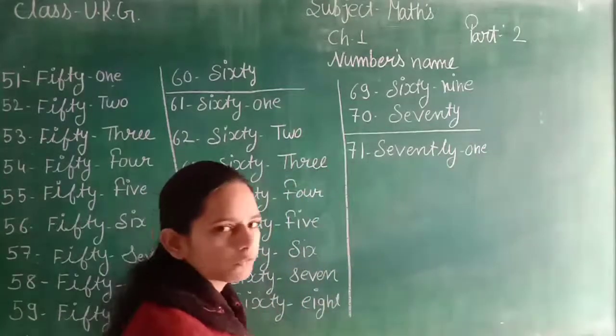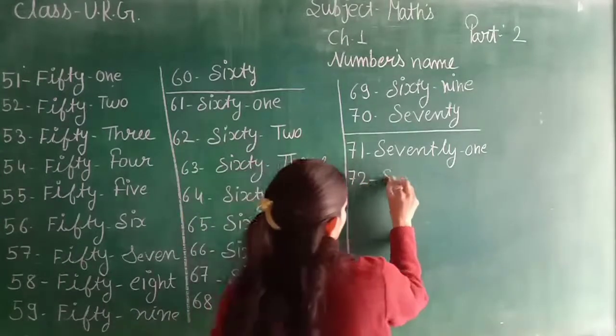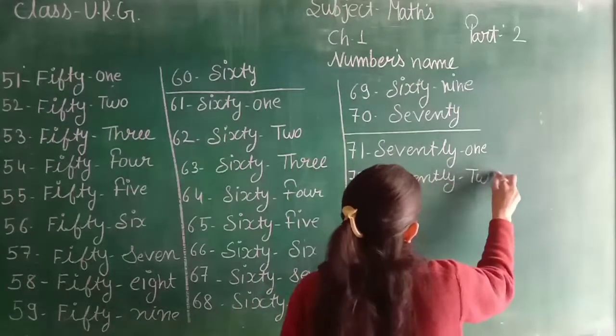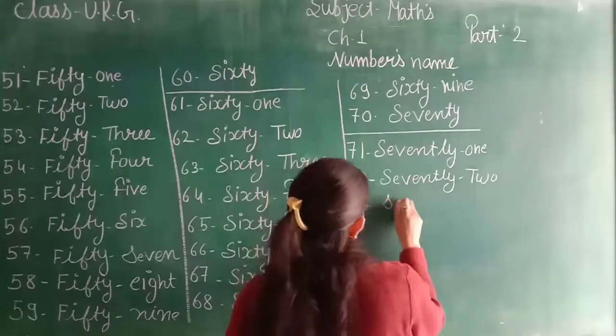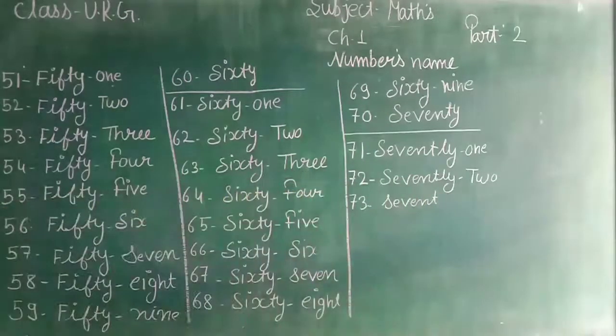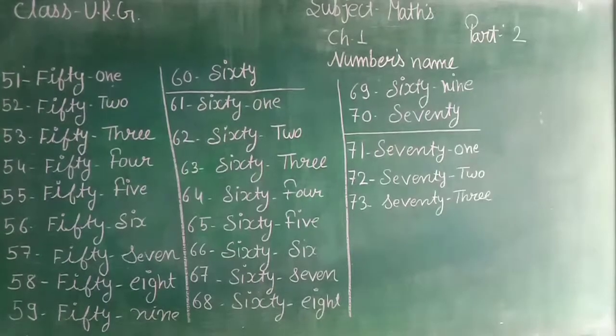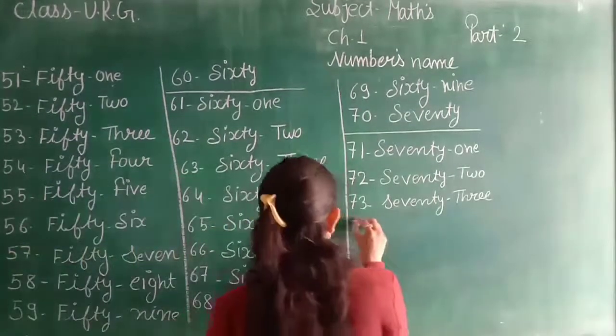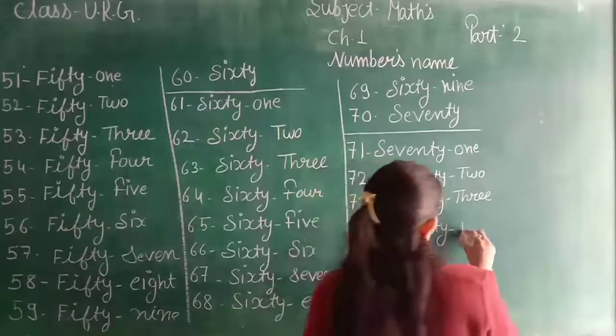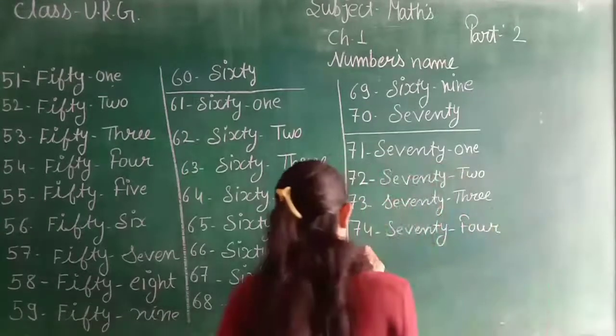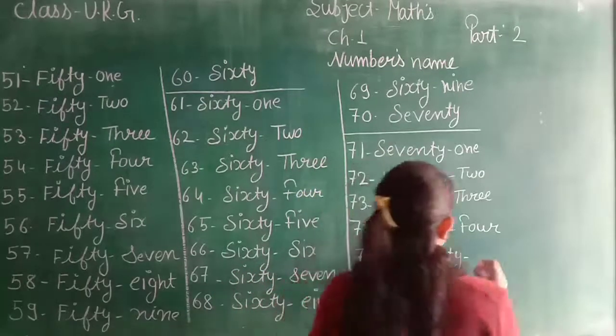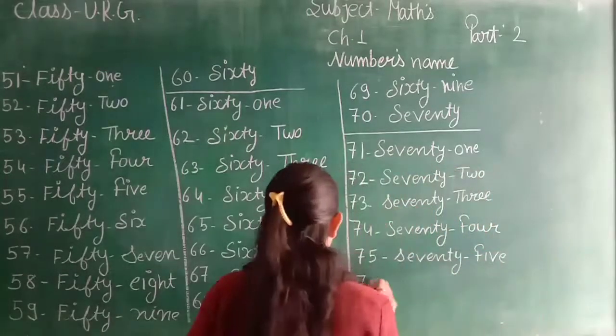72, S-E-V-E-N-T-Y, 72, T-W-O, 2. 73, S-E-V-E-N-T-Y, 73. Filling now for 74, S-E-V-E-N-T-Y, 74, F-O-U-R, 4. 75, S-E-V-E-N-T-Y, 75, F-I-V-E, 5.